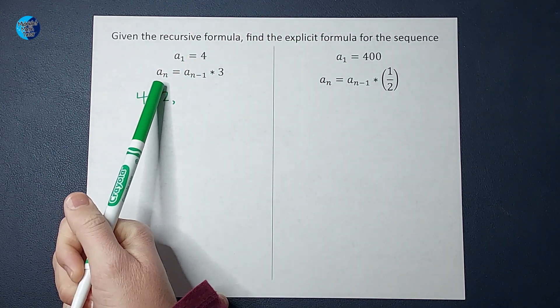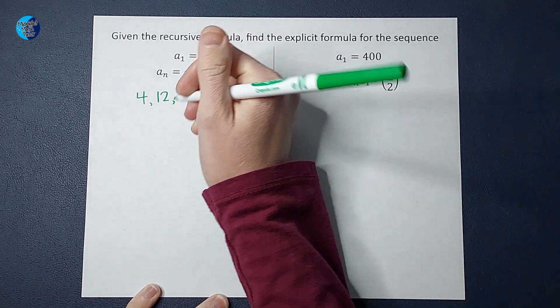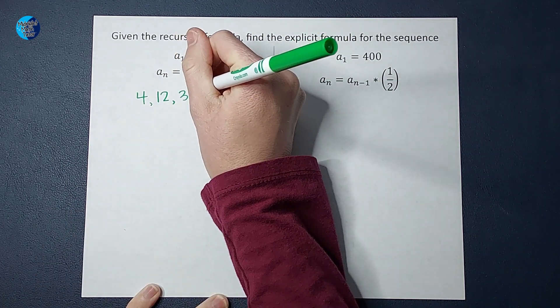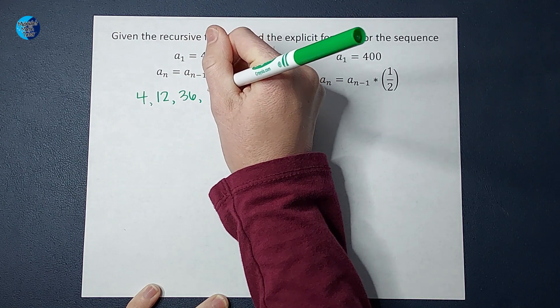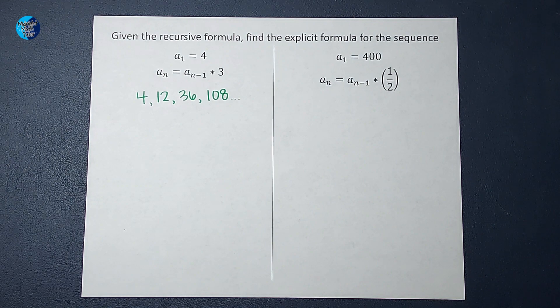Then if I want to find the third term, take the one before it, 12, multiply by three and I get 36. Multiply by three again, I get 108. I could keep going, but I'm feeling pretty good about these four numbers.